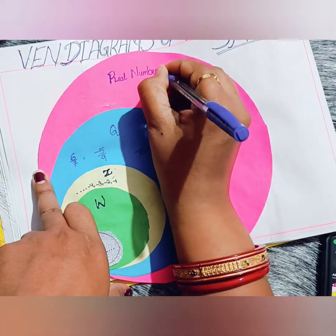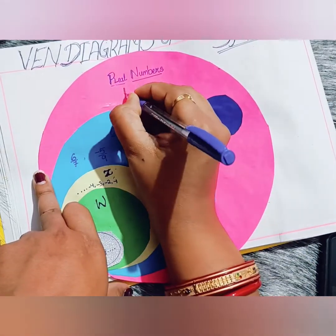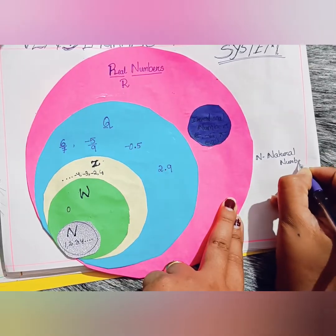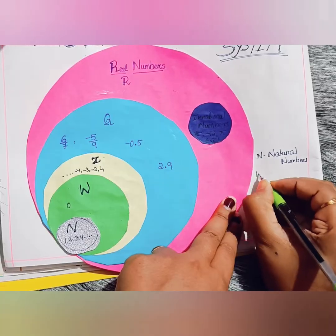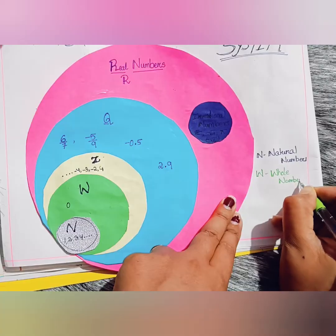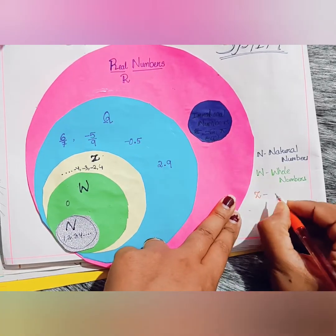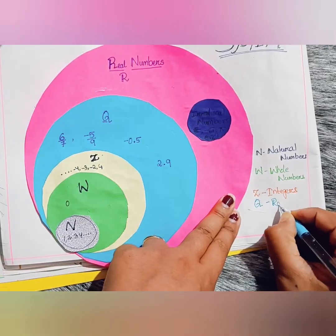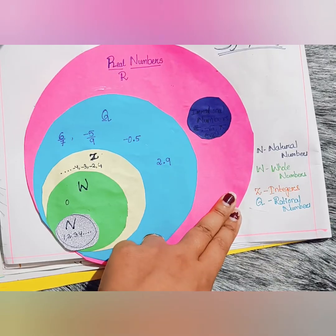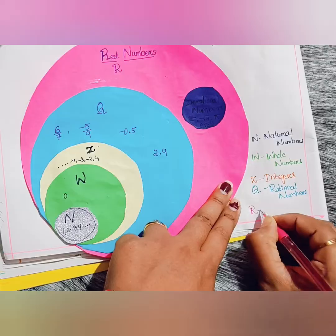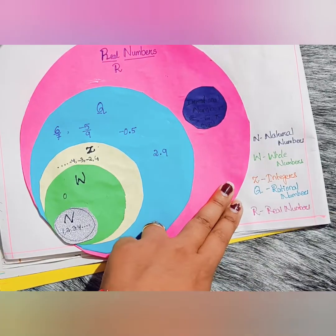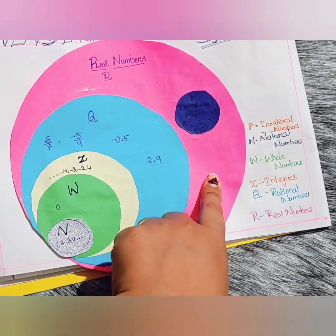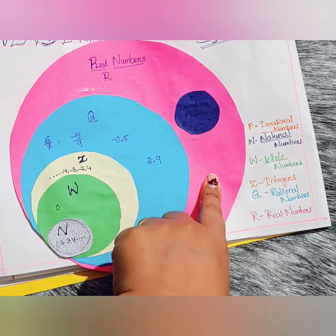Next come the real numbers. Any number which can be represented on the number line is a real number, denoted by R. It includes both rational and irrational numbers. The irrational numbers, denoted as P, are numbers that cannot be expressed as a ratio of integers — for example, root 2, pi, or minus root 6. So all natural numbers, whole numbers, integers, rational numbers, and irrational numbers are all real numbers.